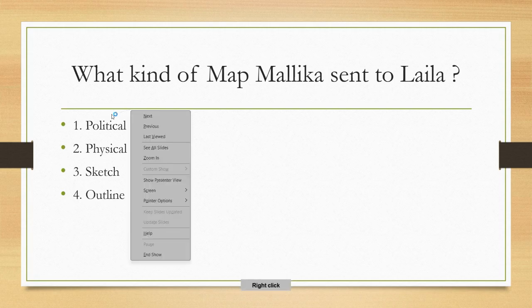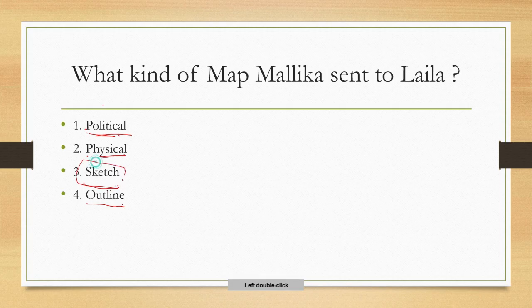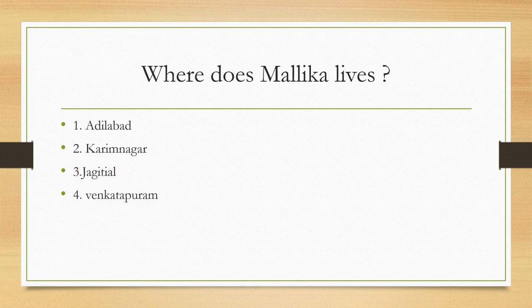The options given are: first, political; second, physical; third, sketch; fourth, outline. The answer is sketch. Mallika sent Laila a sketch map, and with the help of that sketch map, Laila was able to reach Mallika's house.